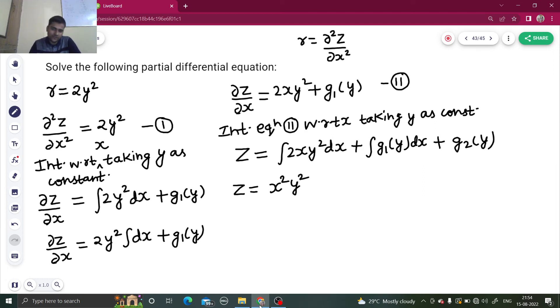Again, g1y will come out. Integration of dx is x. So x times g1y plus g2y. So this becomes your final answer. Z equals to x square y square plus x times g1y plus g2y.